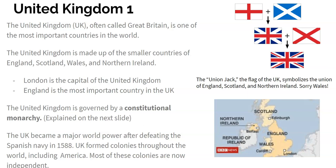The flag of England is the red and white cross. The flag of Scotland is the sideways X — it's blue and white. The flag of Northern Ireland is the red X. And together they make the flag of the UK. For some reason, Wales got left out. The UK is governed by what's called a constitutional monarchy, which I'll explain in the next slide. The capital city is London, and England is the most important of the four countries that make up the UK.